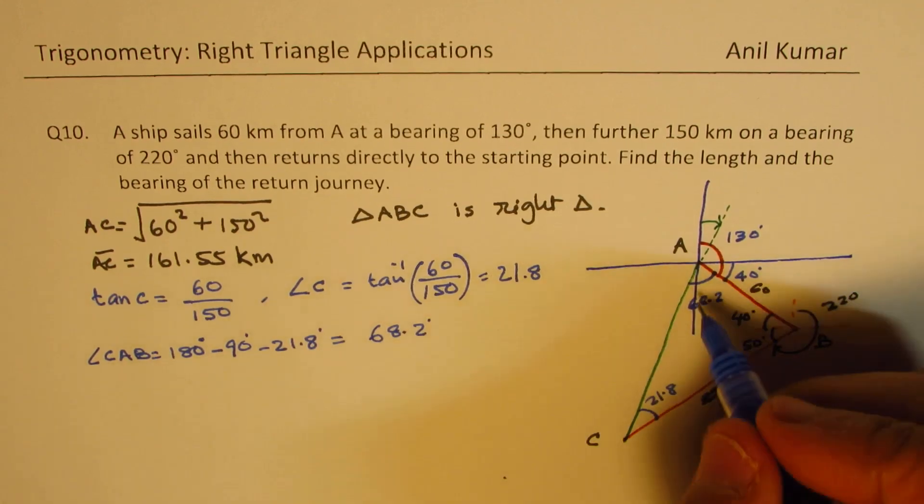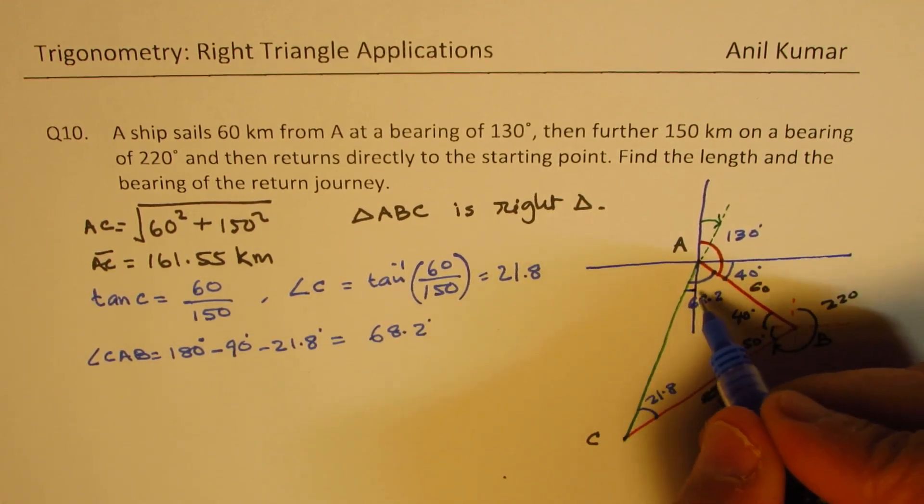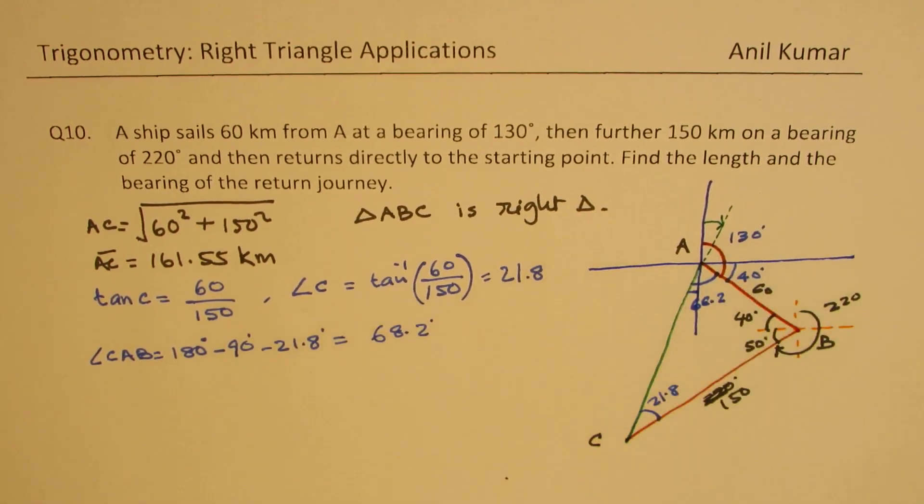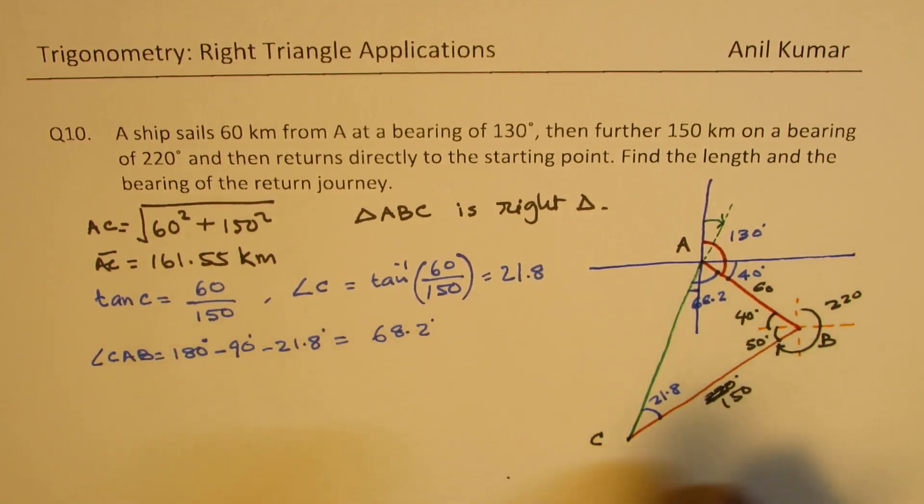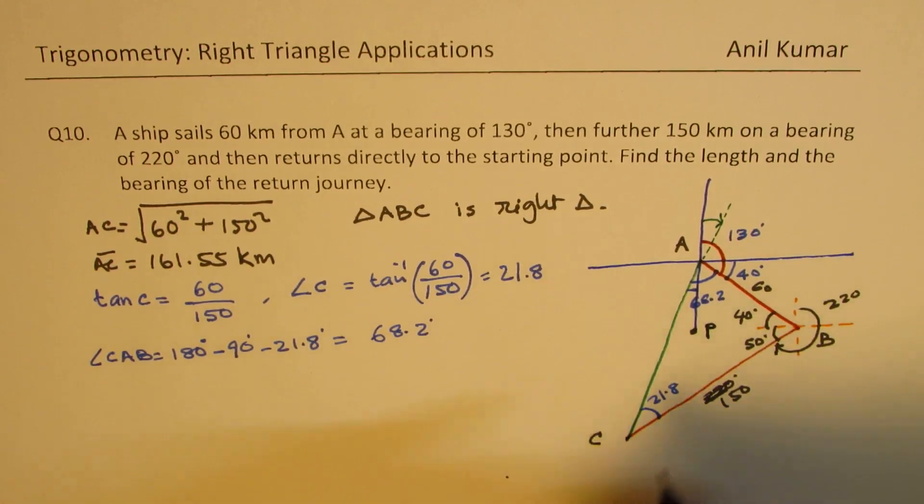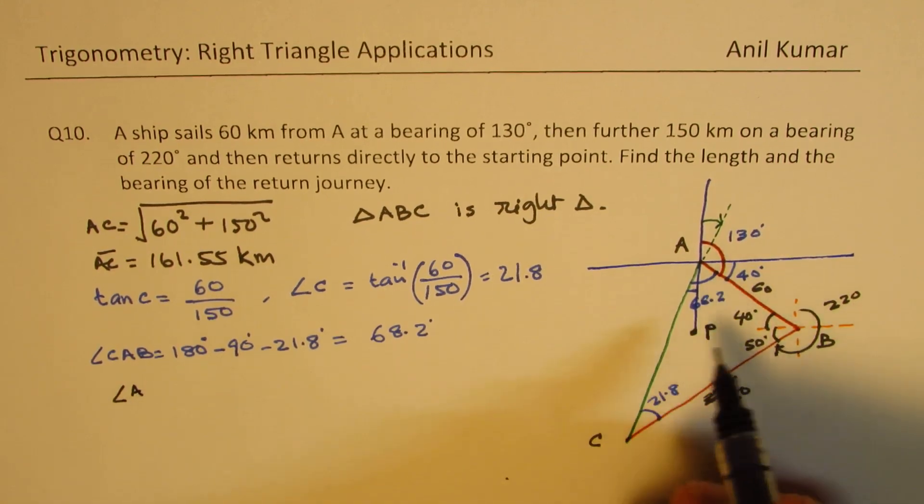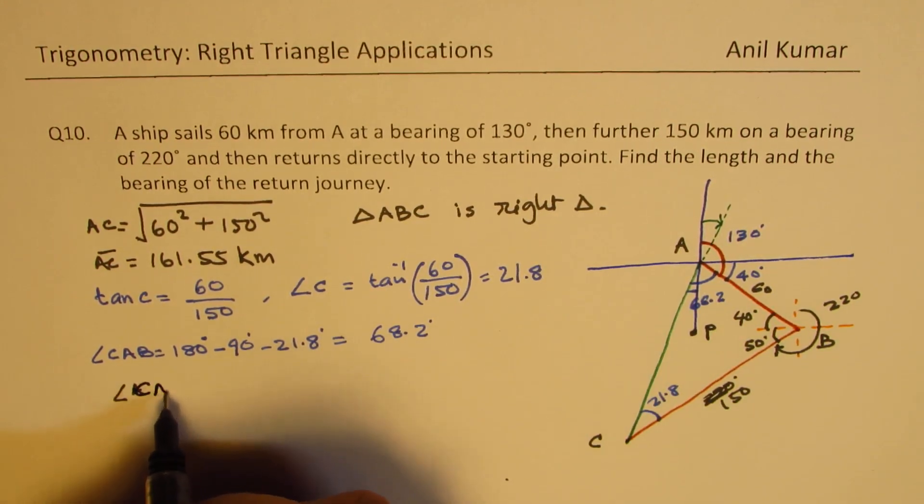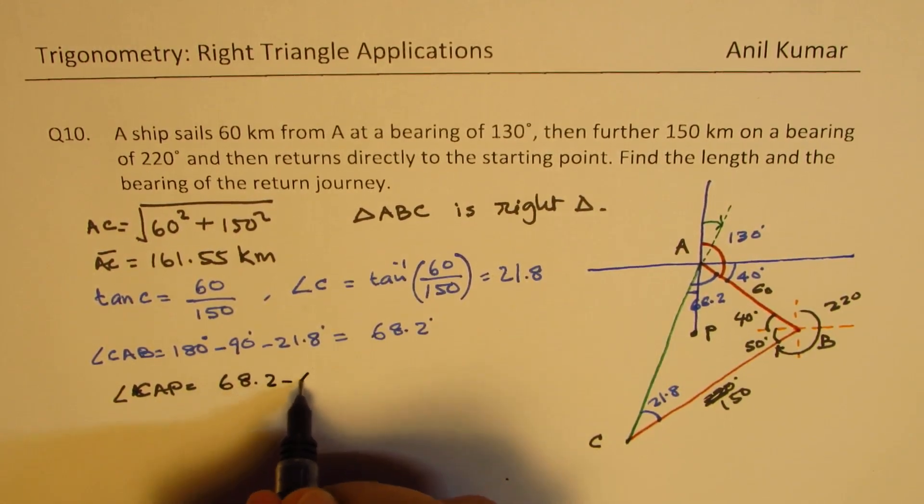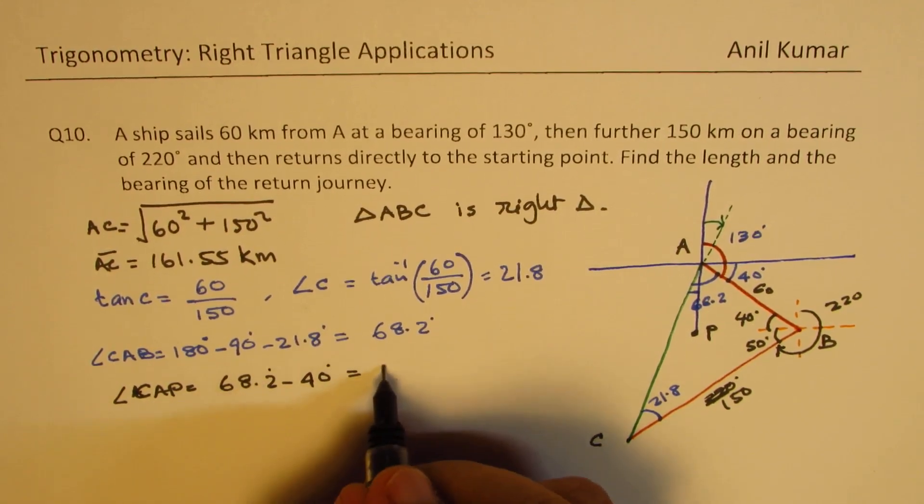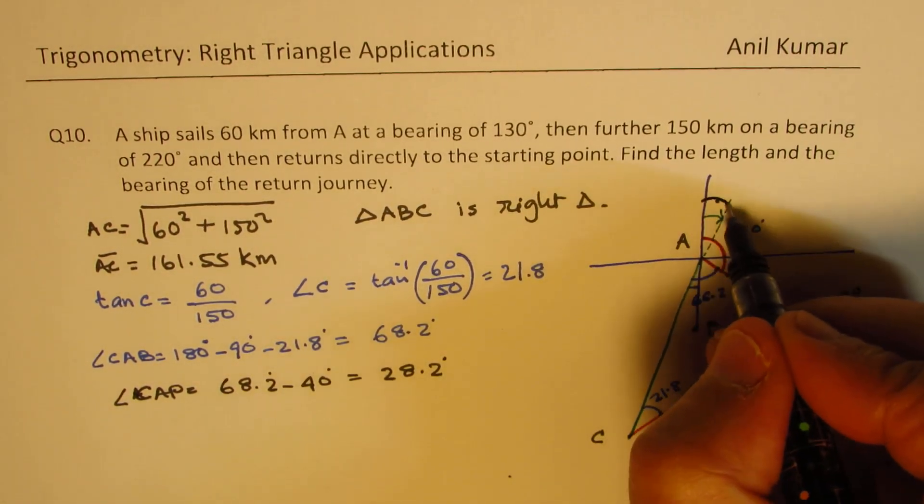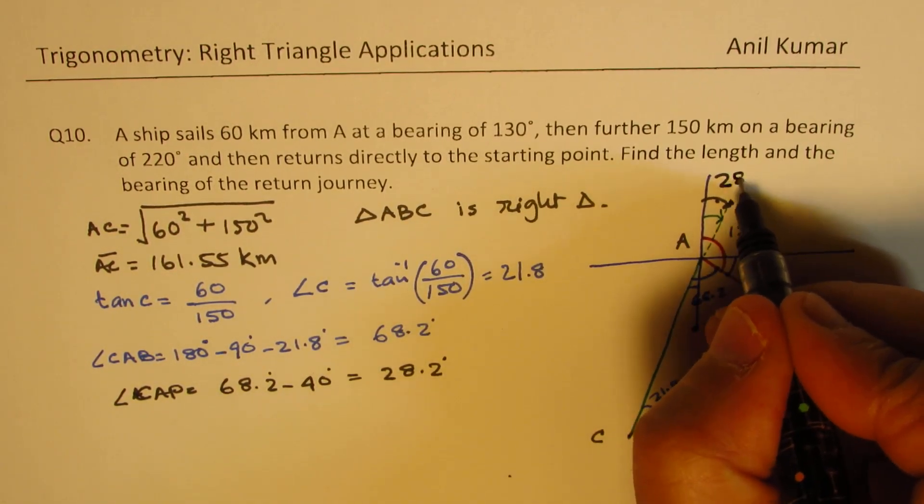Now we know that the smaller angle here should be how much? 68.2 minus 50. So we have this combination. So let's take this point as P. So the angle CAB will be equal to 68.2 minus 40 degrees. So we get 28.2 degrees. So that is the vertically opposite angle right there. And so we have this angle as 28.2 degrees.